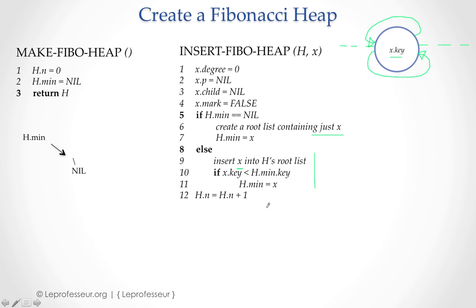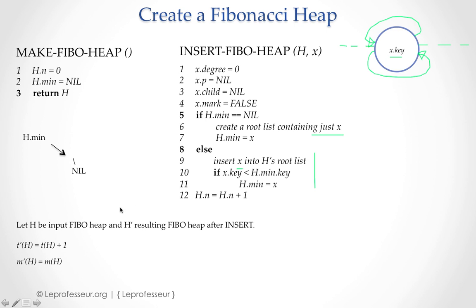Now let's talk about potential, which we discussed in the previous lecture. We can use the potential method to get an idea about the complexity of this algorithm based on the Fibonacci heap. Let H be the input Fibonacci heap, and after inserting node x our new Fibonacci heap is called H'.